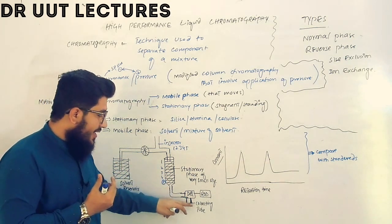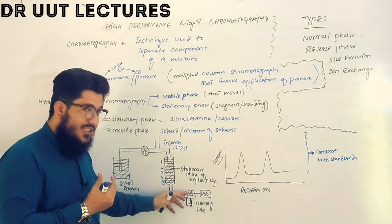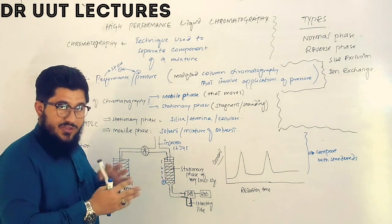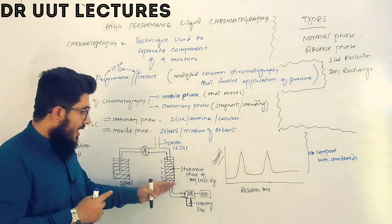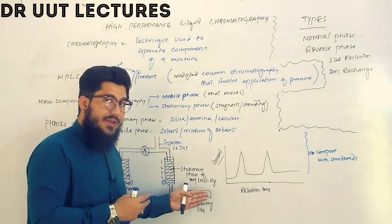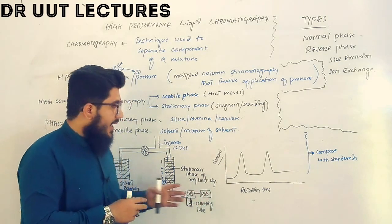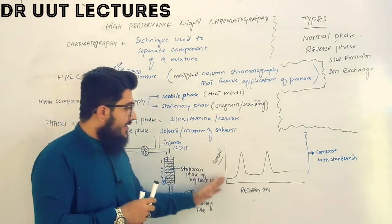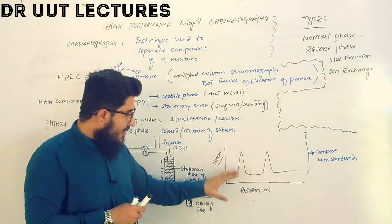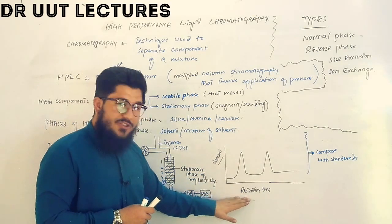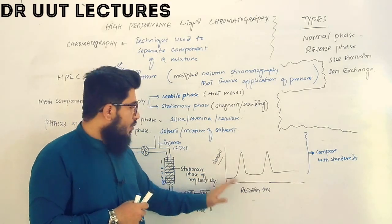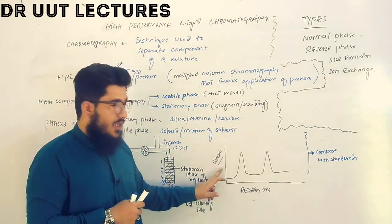When the mobile phase reaches the detector, it detects the mobile phase, and then components from the mixture come one by one. In the collecting tube we collect our mobile phase and our components. The detector detects these components, sends the signal to the readout device, and finally we get a graphical representation. On the x-axis it represents retention time, and on the y-axis it represents concentration.